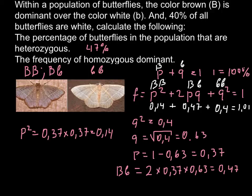And the second question: the frequency of the homozygous dominant. p squared stands for the homozygous dominant, which is 0.14. If we multiply it by 100, we get the answer as a percentage — that is 14%.